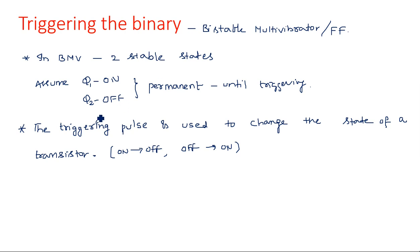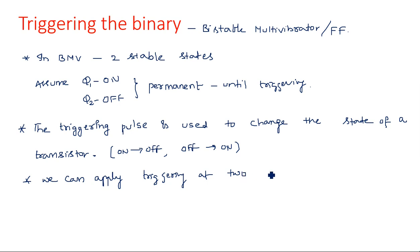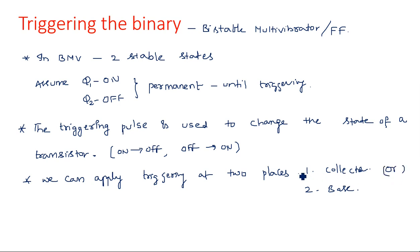In a bistable multivibrator, as there are two stable states, we can apply the triggering pulse at two places — either at the collector or at the base. As there are two transistors, there are two collectors and two bases, so the triggering pulse is applied at either the two collectors or the two bases.